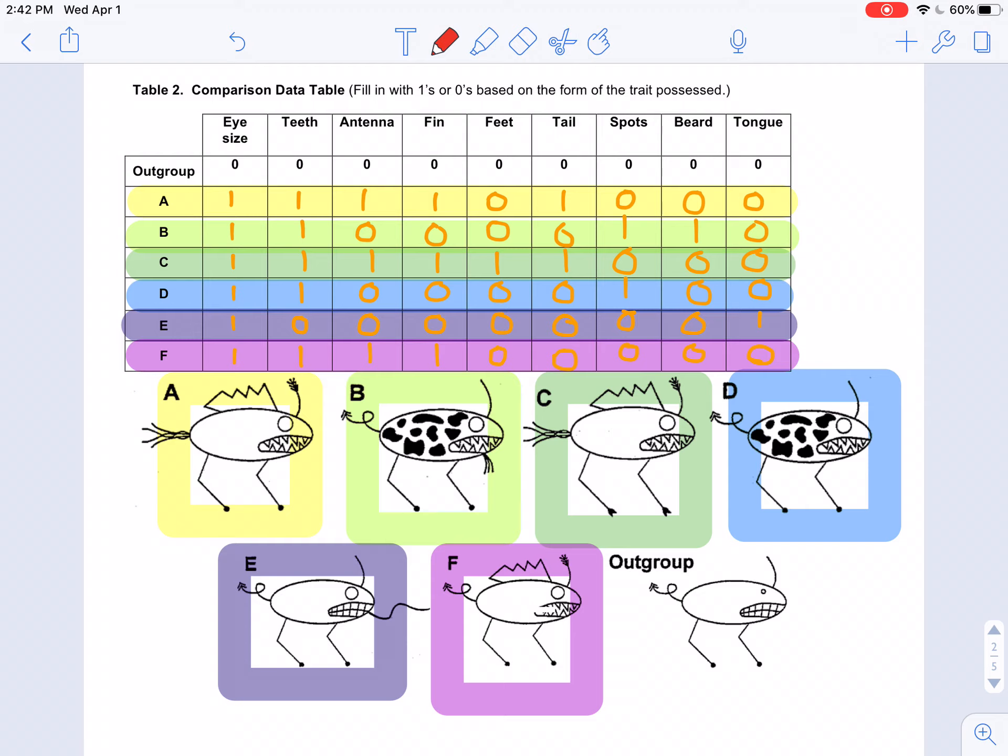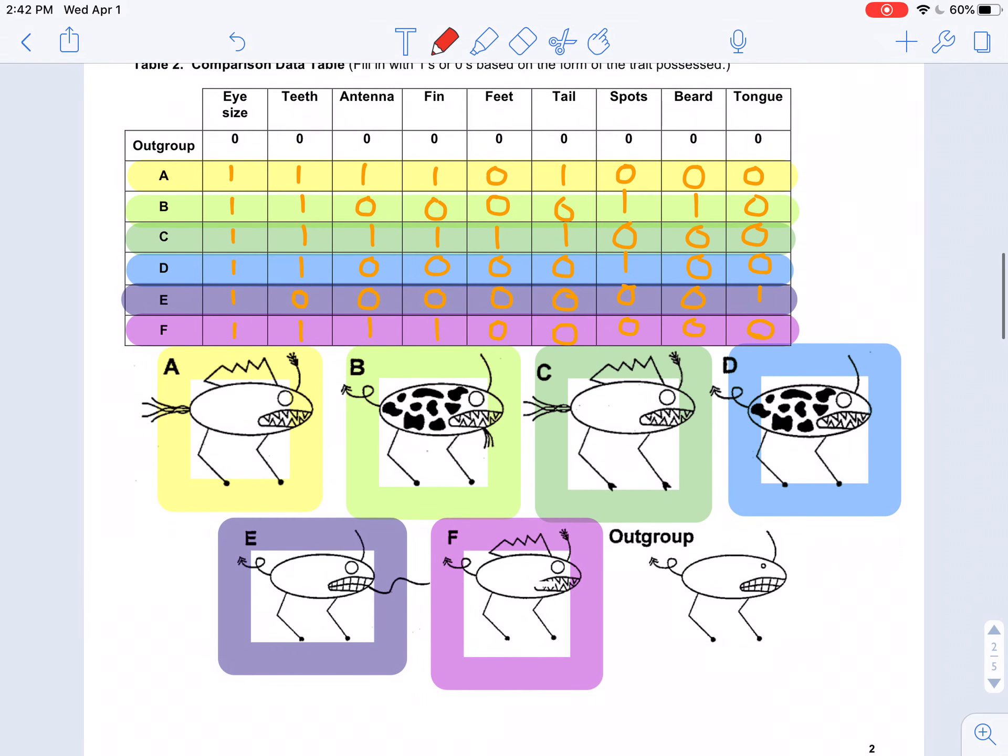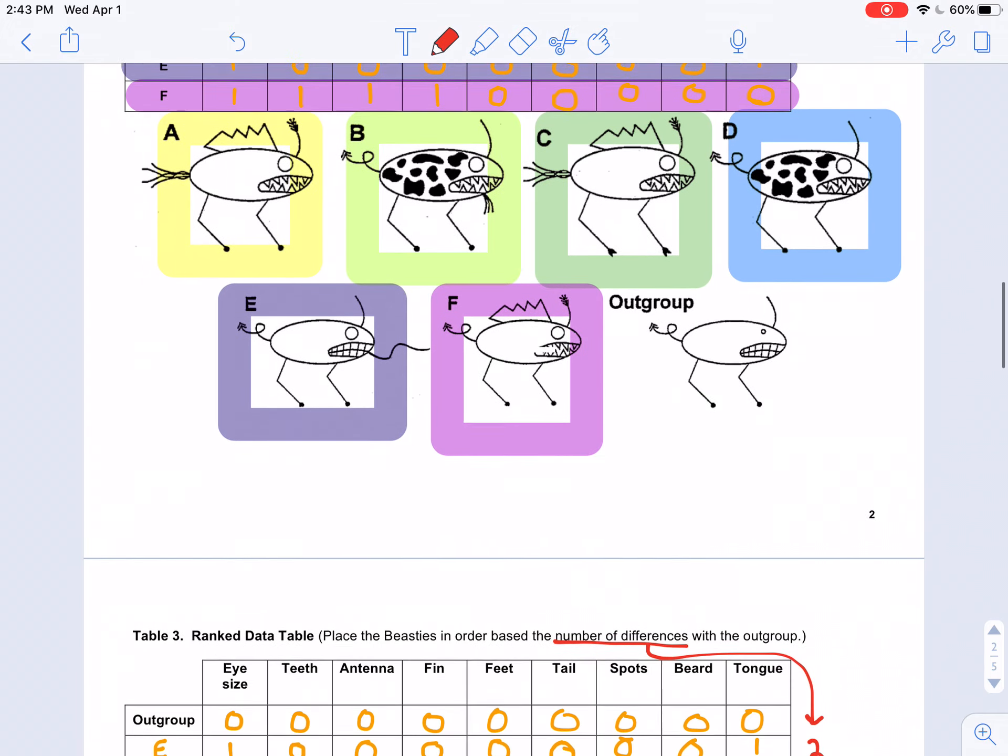And then for A, tail, I have a 1 because they have a brushed or brushy tail instead of a pointy one. And then for A, spots, they do not have spots, so I put a 0. For A, beard, I put a 0 because they do not have one. And then for A, tongue, I have a 0 because they do not have one.